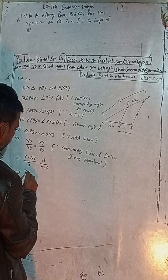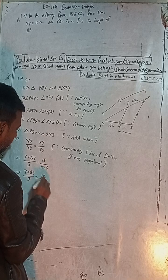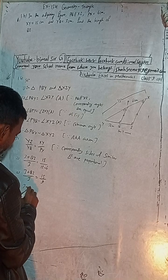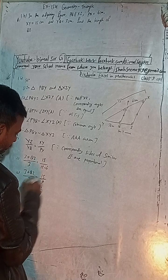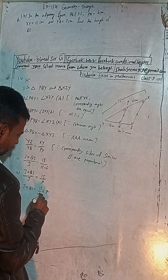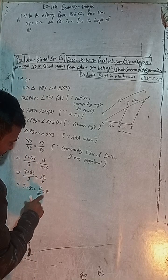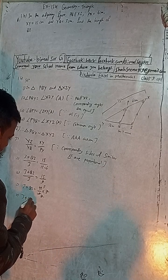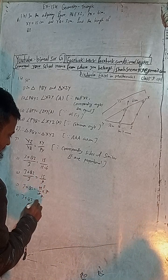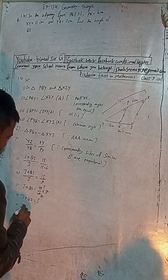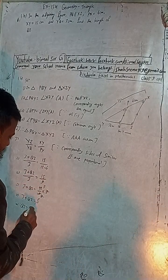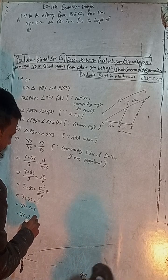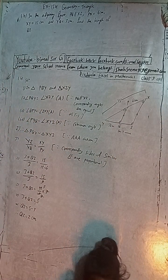Solving: 3 plus QZ equals 15 by 9 multiplied by 3, which simplifies to 5. So 3 plus QZ equals 5, therefore QZ equals 5 minus 3, which gives QZ equals 2 cm. The answer in the book is also 2, so this is the solution of question 1B.